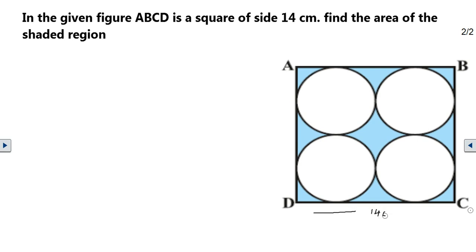Guys, a square has been given with 14 centimeters on each side. So obviously, first of all, let us find the area of the square, which is so simple, side into side. And then we can focus on the circles. The area of the square is equal to 14 multiplied with 14, which is 196 centimeters square.